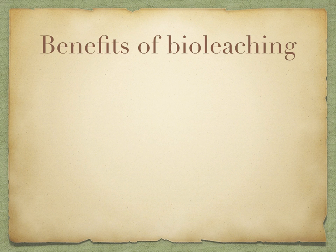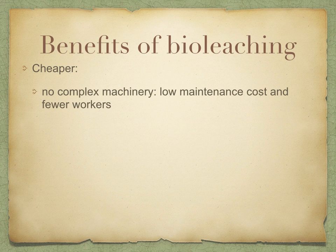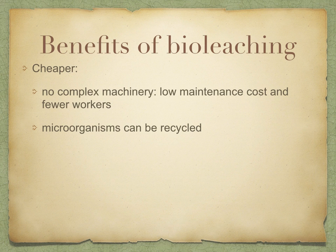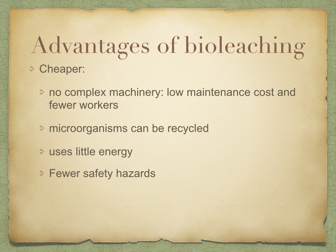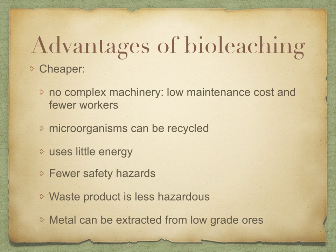Benefits of bioleaching: compared to traditional methods of extracting metals such as mining and smelting, bioleaching has a number of advantages. The main one is that it's cheaper, because it's a simple process with no complex machinery, and therefore low maintenance costs and fewer workers. The microorganisms are self-replicating, so they can be recycled. The process uses little energy, as it's carried out at low temperatures and atmospheric pressures. There are few safety hazards, and the waste product is less hazardous and so it's easier and cheaper to remove. Metals can be extracted from low-grade ores, meaning bioleaching can be used in remote areas and where deposits of ore are small, where extracting metals by other methods would be uneconomical.